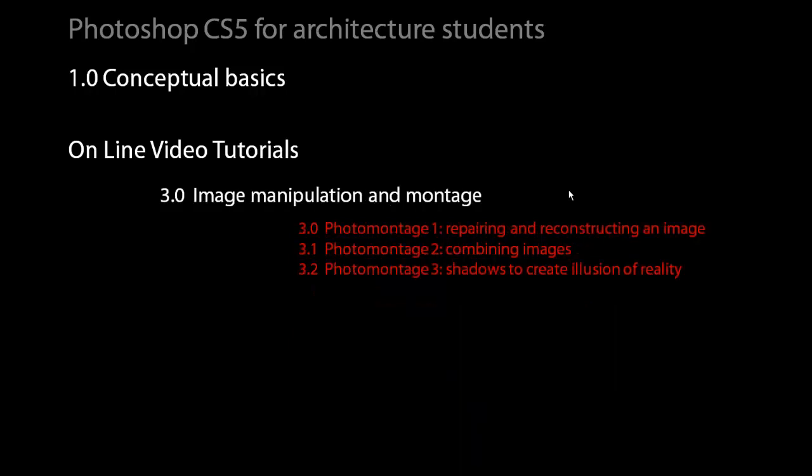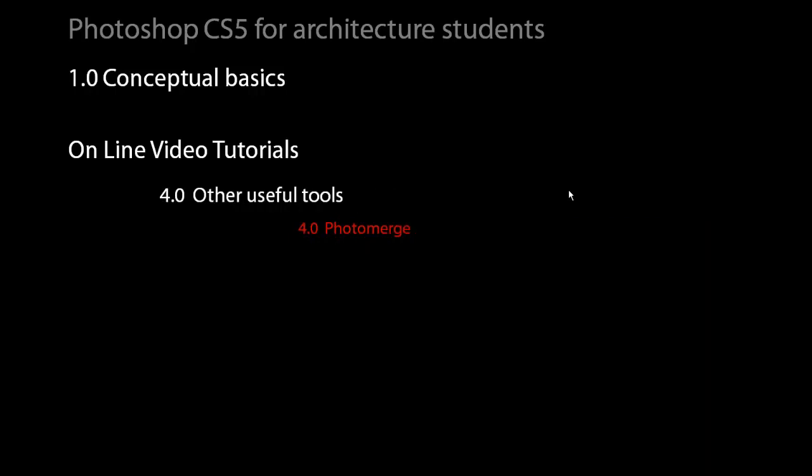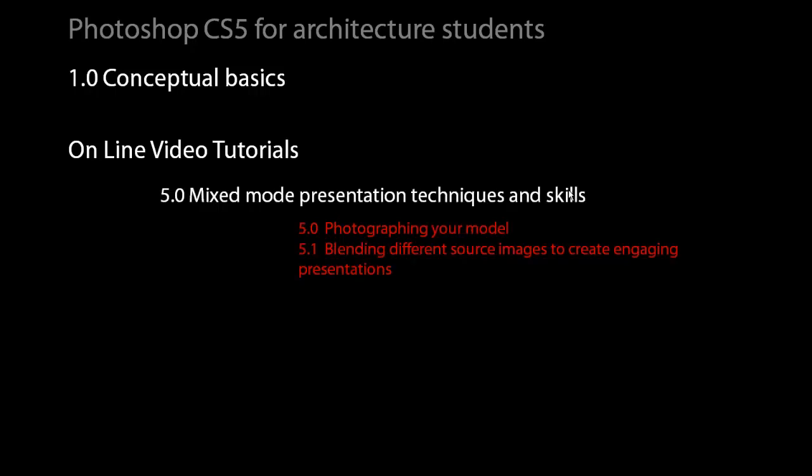In the third section, we will be looking at image manipulation and photo montage. These are important in creating contextual imagery for our presentations, as well as looking at ways to combine digital imagery from varied sources, including photos of models and images from computer models. In the fourth section, we will be taking a quick look at some specialised tools and processes. In the final section, we will be looking at mixed-mode presentations and picking up tips such as photographing your models effectively and recombining images from different modes to create engaging and cogent presentations.